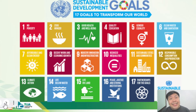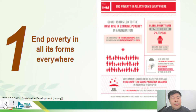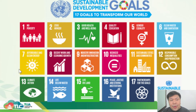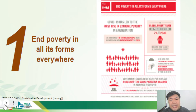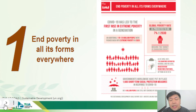Now let's discuss each SDG one by one. SDG number one is 'End Poverty' — the full name is 'End poverty in all its forms everywhere.' According to the latest 2021 update, COVID-19 has led to the first rise in extreme poverty in a generation. The goal is zero statistics by 2030, but already projections estimate the global poverty rate at around seven percent by 2030.